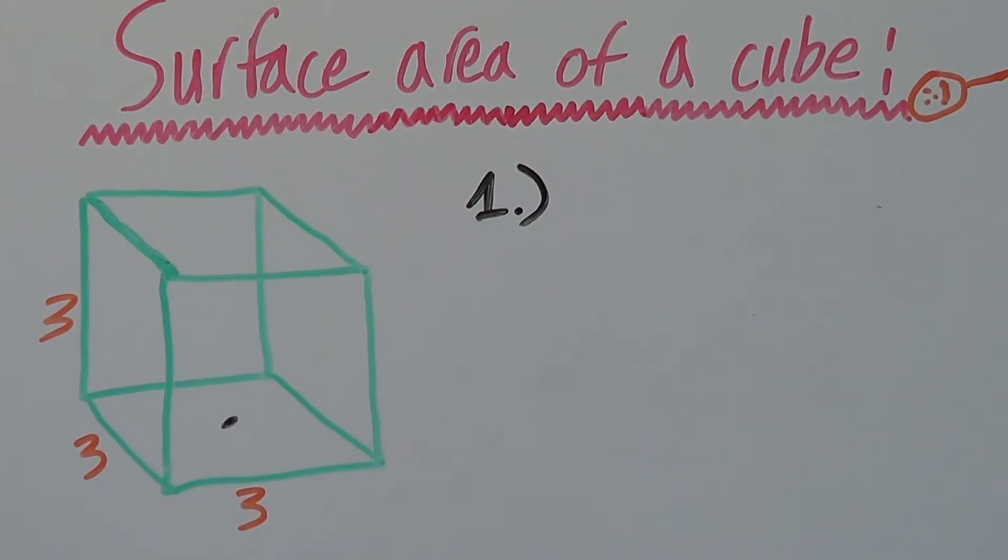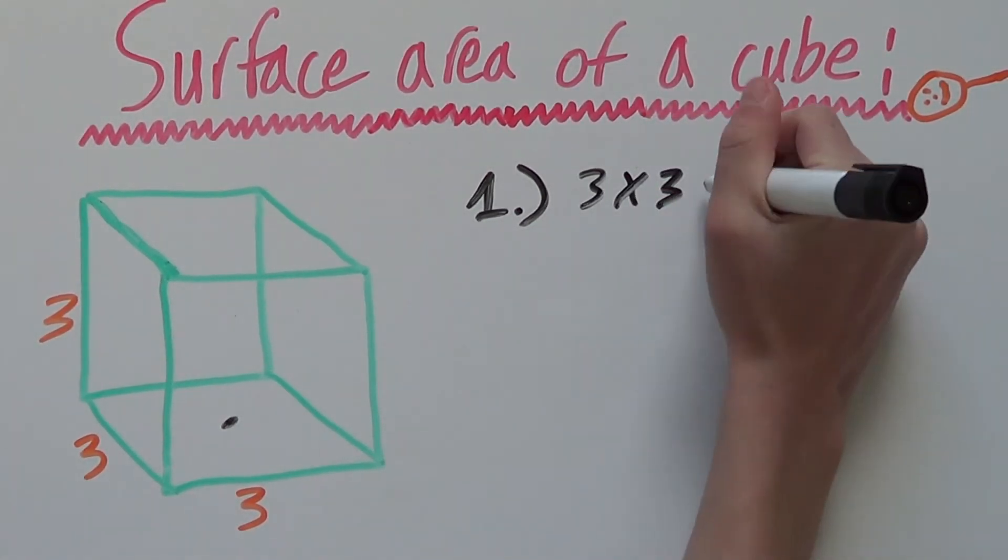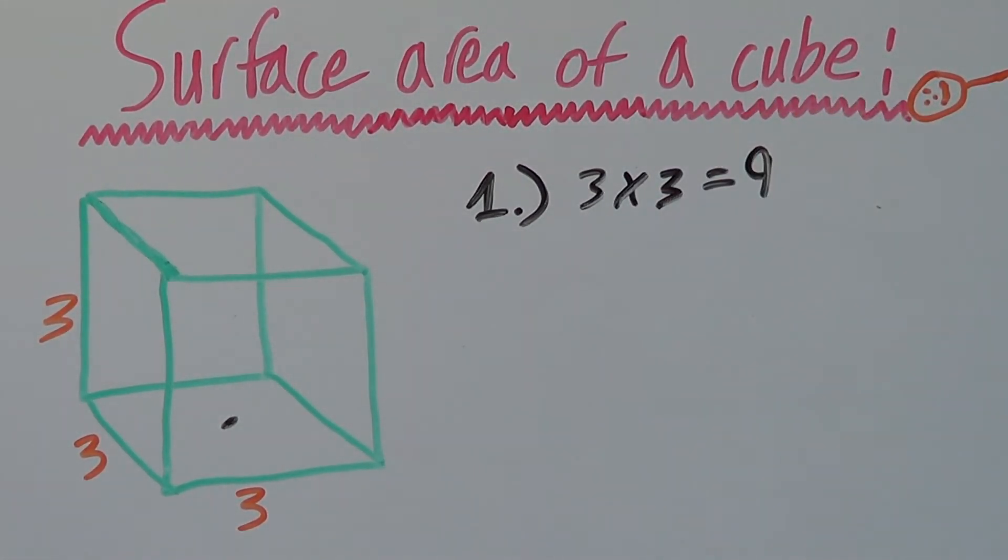Remember, area is length times width. So the area of that square will be length, which is three, times width, which is also three. So our area is nine.